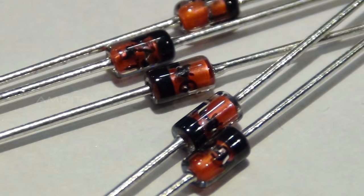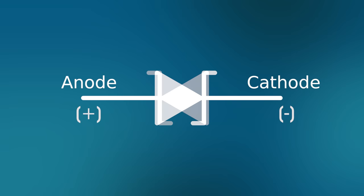A Zener diode is a heavily doped silicon crystal diode which allows current to flow in the forward direction. It also permits the current to flow in the reverse direction without damaging the junction.